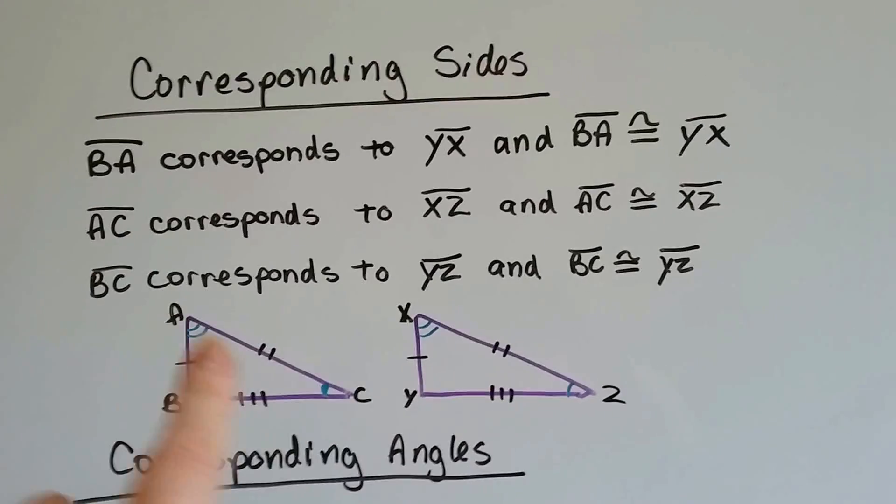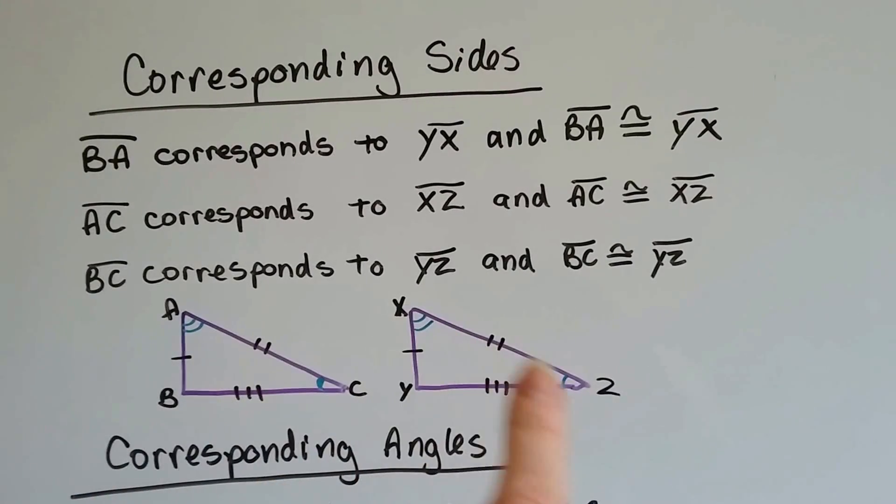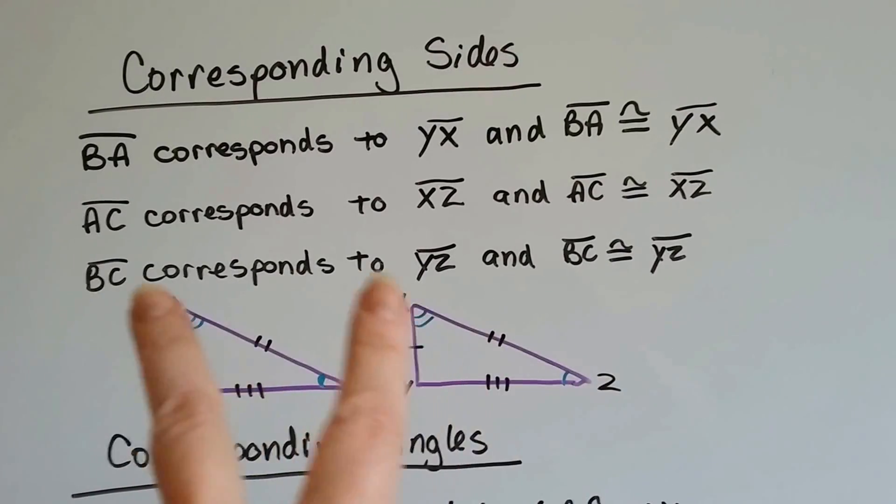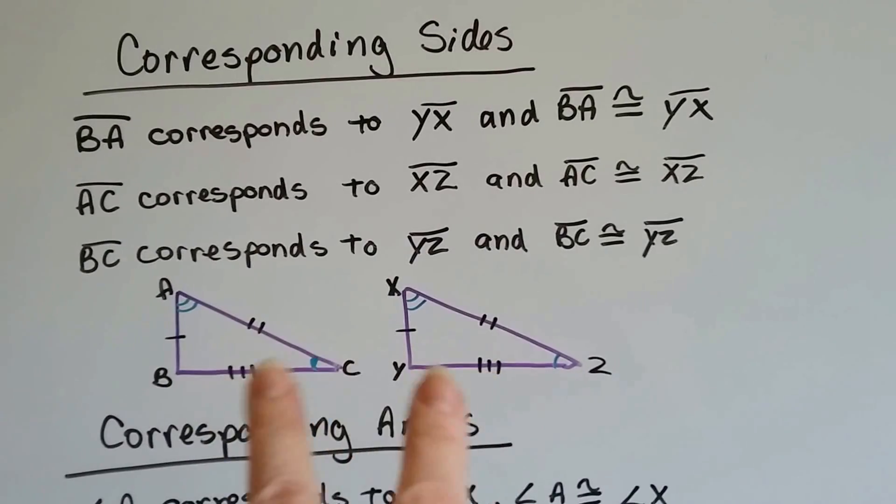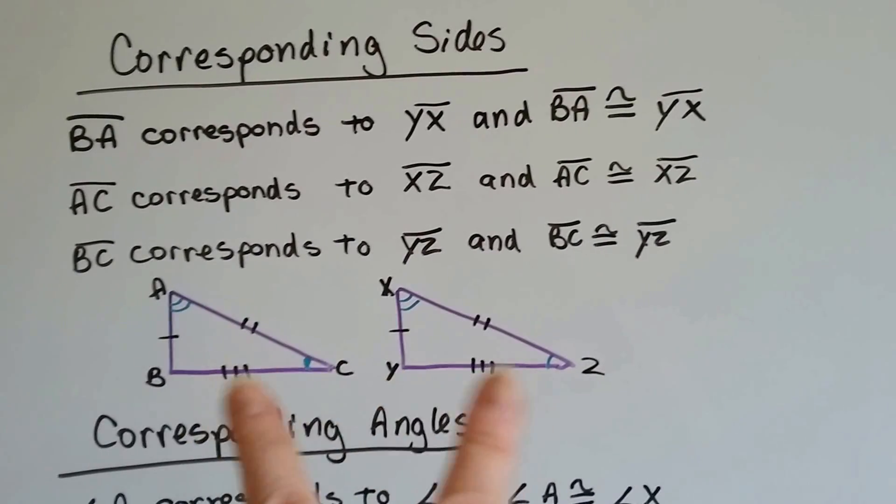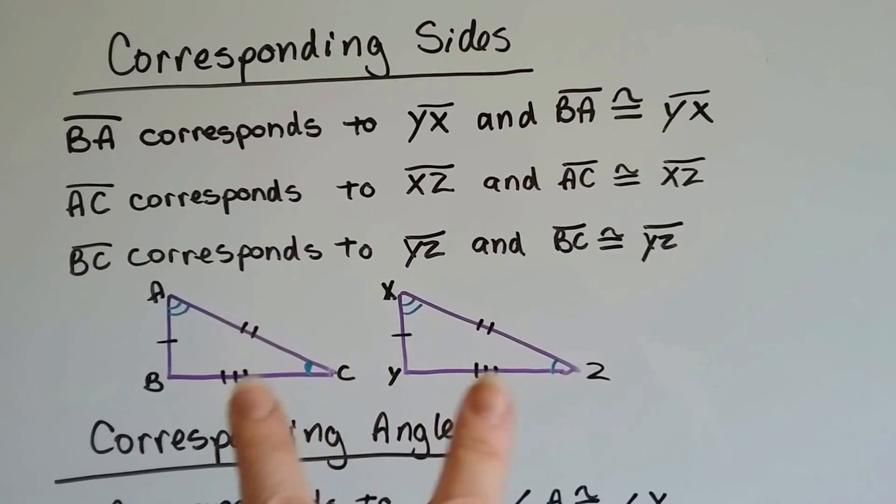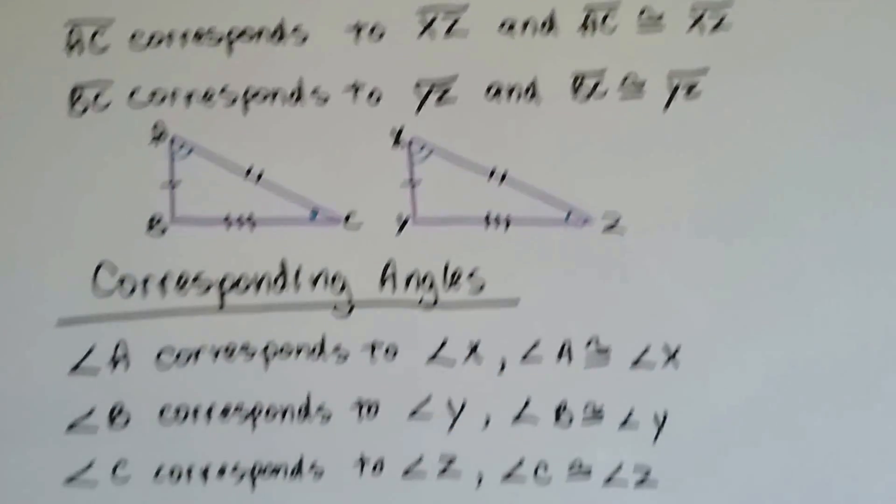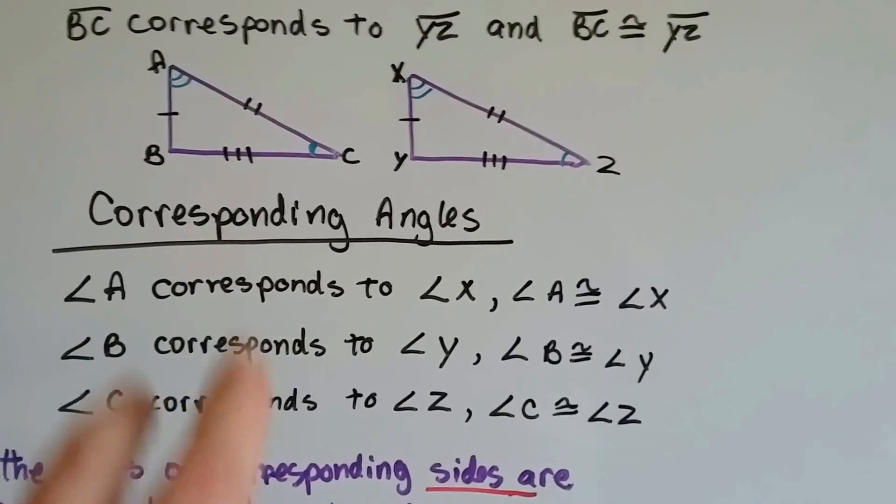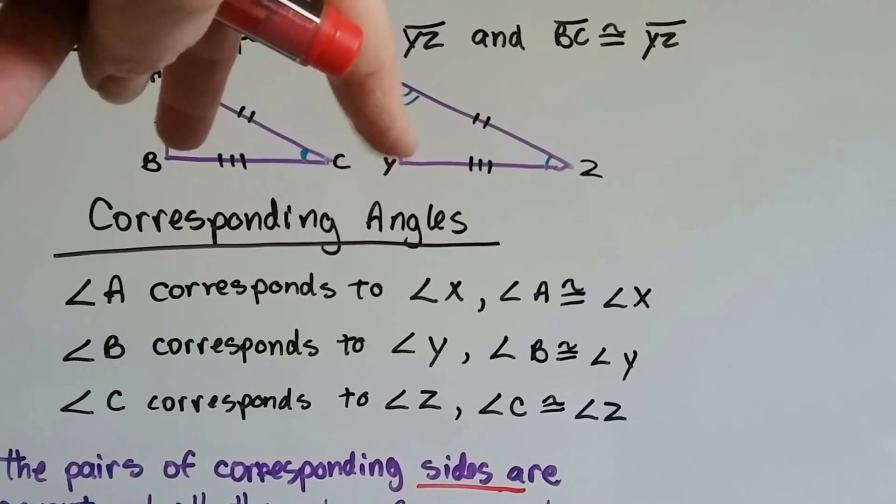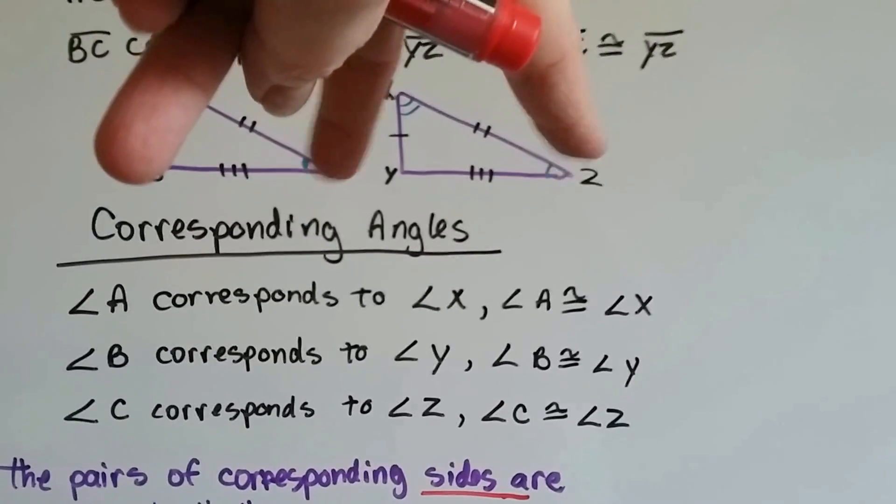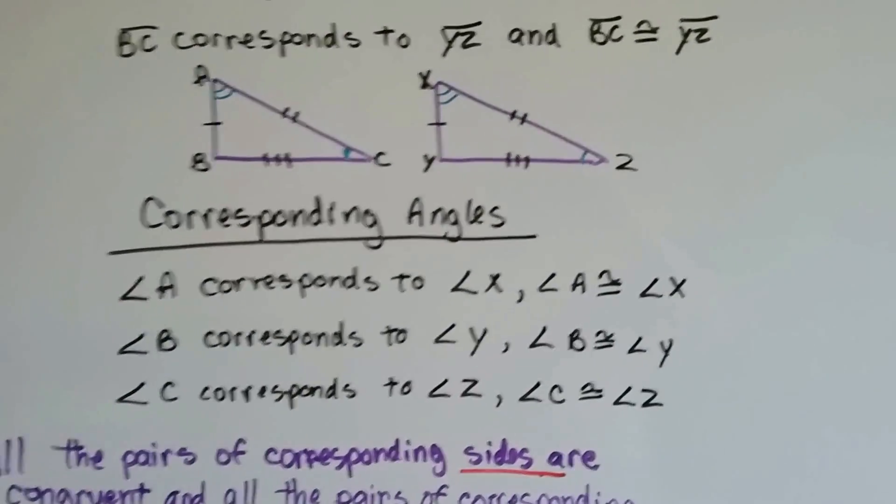AC, this is the hypotenuse of the triangle, isn't it, is congruent to XZ. These two are congruent. And BC and YZ are congruent. They correspond to each other. Now for the corresponding angles, A and X correspond to each other, B and Y correspond to each other, and C and Z correspond to each other, so they're congruent.